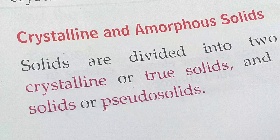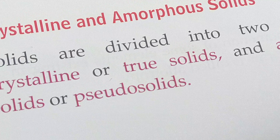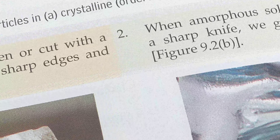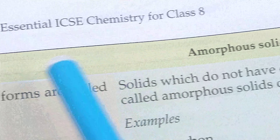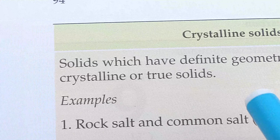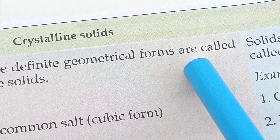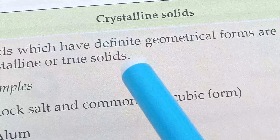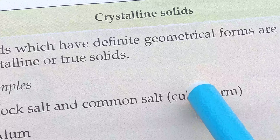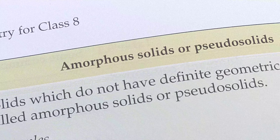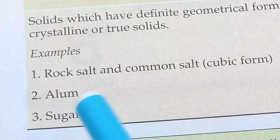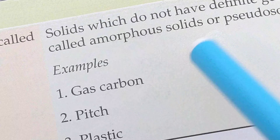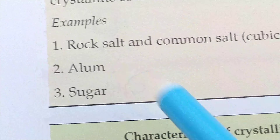Pseudo solids are amorphous forms. Solids which have definite geometrical forms are called crystalline or true solids. Solids which do not have a definite geometrical form are called amorphous or pseudo solids. Examples of crystalline solids: rock salt and common salt. Examples of amorphous solids: glass, carbon, plastic, etc.